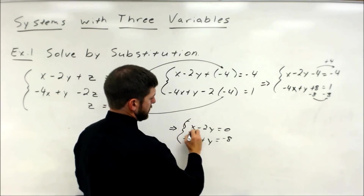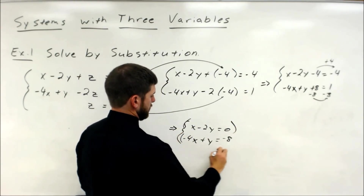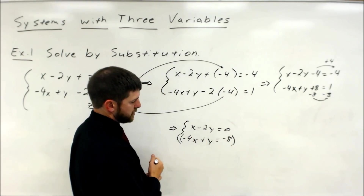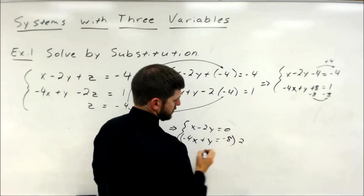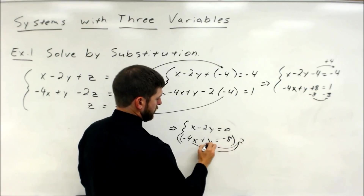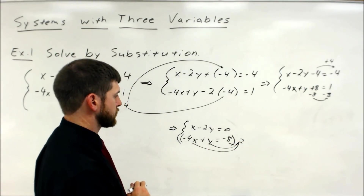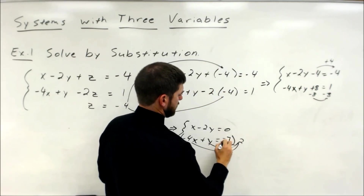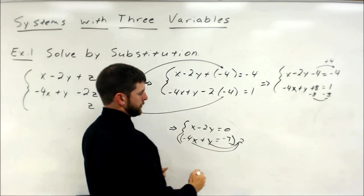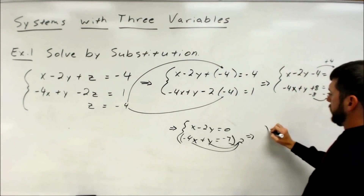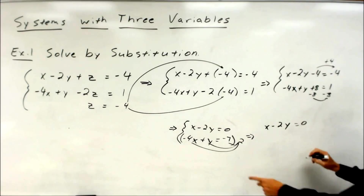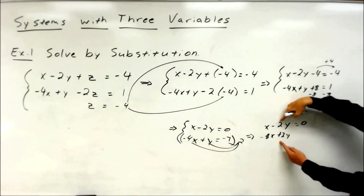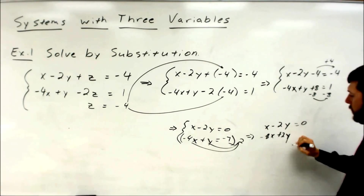Let's work off of this one. We'll take the top equation. If I want the 1 and 2 to match up, I need to make the bottom into a 2. So I put 2 out here and distribute it to every single term. Top equation: x minus 2y equals 0. Bottom equation, multiplied by 2, makes it negative 8x plus 2y. See how we have opposite coefficients? That's what we're looking for to be able to eliminate the y's. And negative 14.